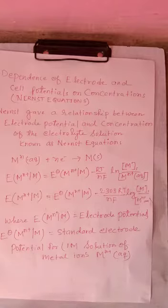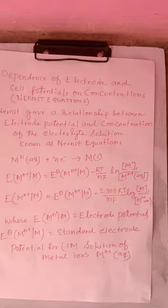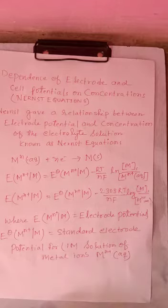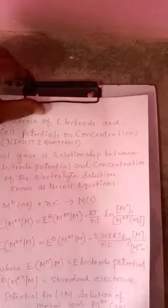Now we see the terms: E(M^n+|M) is electrode potential, E° that will be the E standard electrode potential for 1M solution. Now we will change the page.